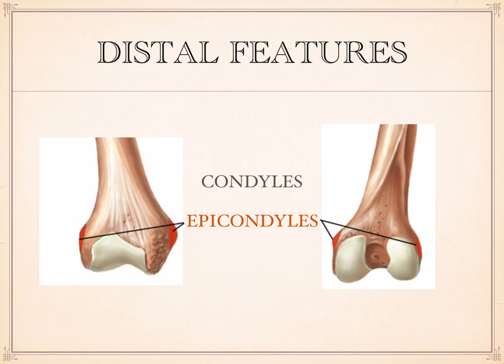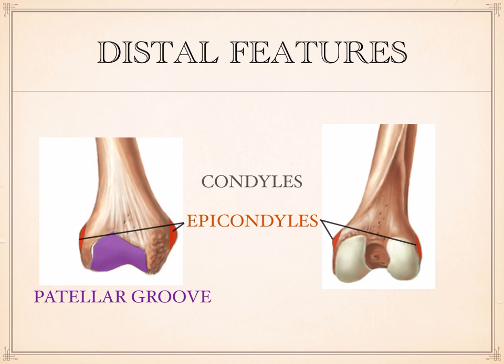Finally, at the distal end, more central to the bone, there is a joint surface in the front referred to as the patellar groove, where the patella slides or glides — this is definitely on the anterior side. On the posterior side, there is a deep cavity or recess between the two condyles referred to as the intercondylar fossa. It's much deeper, so it's very easy to tell the anterior from the posterior side of the bone at the distal end.